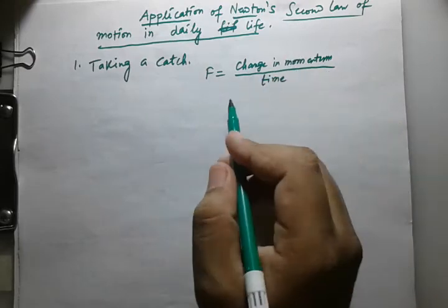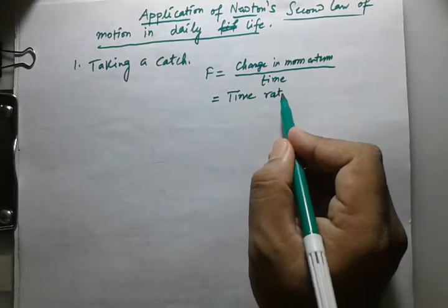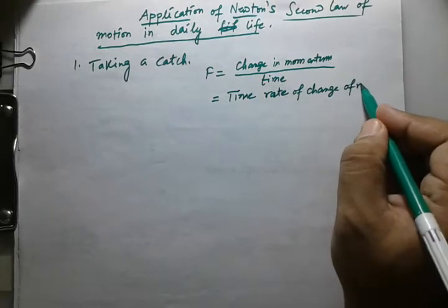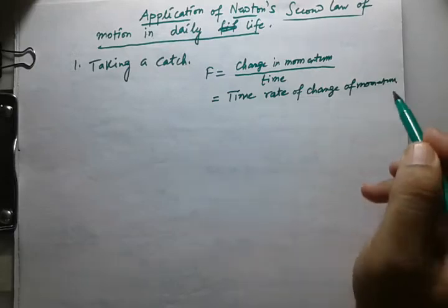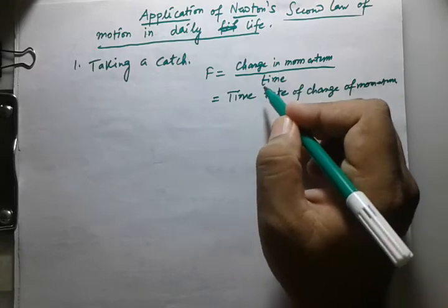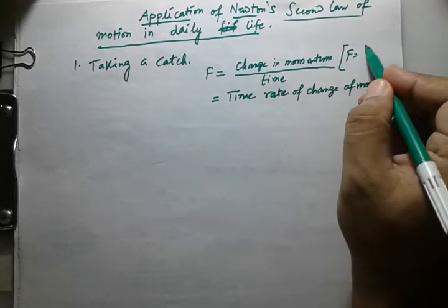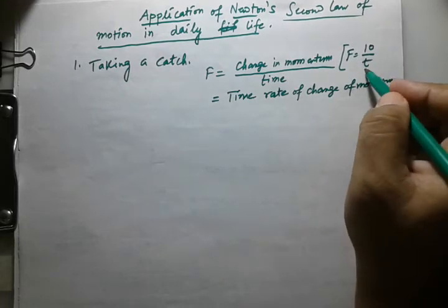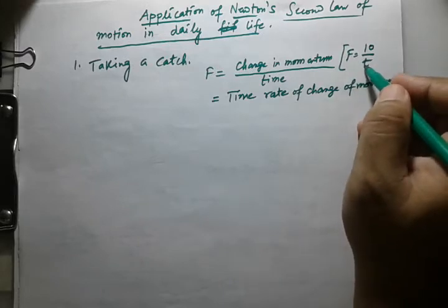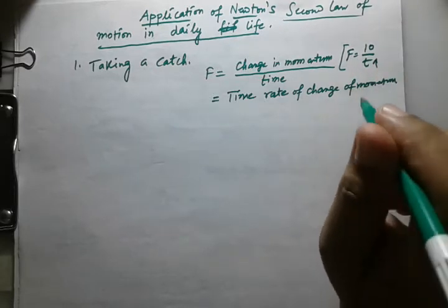This is also called the time rate of change of momentum. If the time is increased, the force will decrease. For example, if F = 10/t, when t = 1, F = 10 Newtons. When t = 2, F = 5. So if time increases, force decreases.